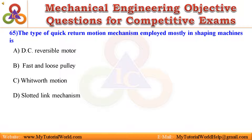65. The type of quick return motion mechanism employed mostly in shaping machines is: A. DC reversible motor, B. Fast and loose pulley, C. Whitworth motion, D. Slotted link mechanism. Answer is Whitworth motion.